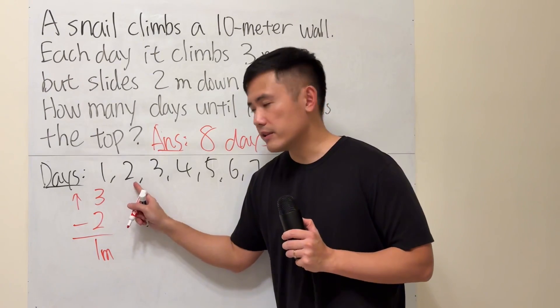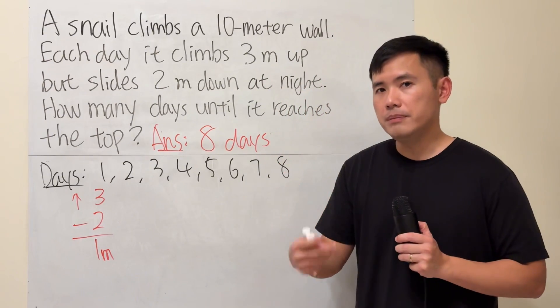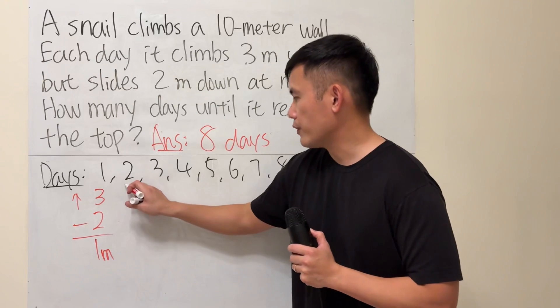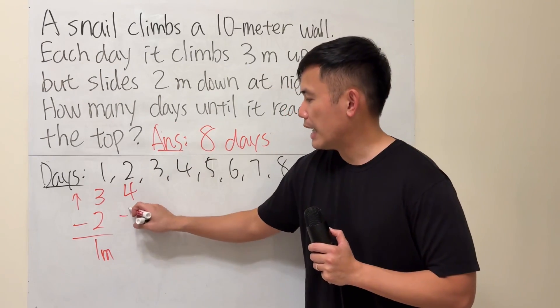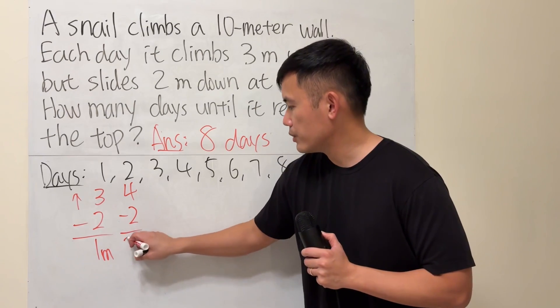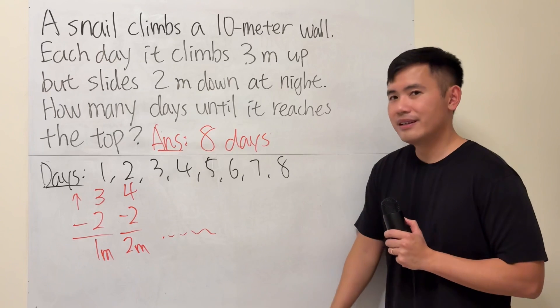And then once we get to the second day, we start it at the first meter mark. Go up by 3. 1 plus 3 is 4. So go up by 3, it's 4, but we remember to minus 2. So we get to 2 meters mark. And then so on, so on. Here's the deal.